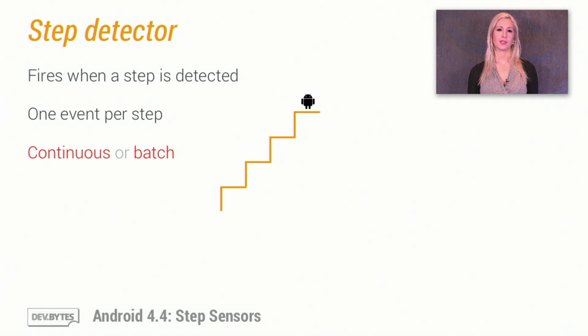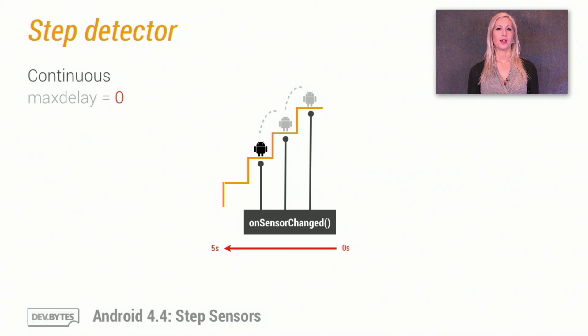There are two ways to receive events from the step detector: continuously or in batches. If you register your listener with a maximum delay of zero, then you'll get continuous events posted as fast as the sensor can produce them. The step detector has pretty low latency, so the times at which you receive step events should correspond closely with the user's actual steps.